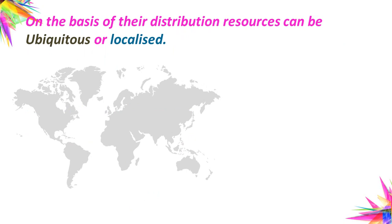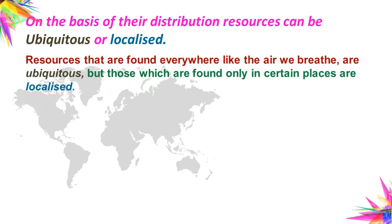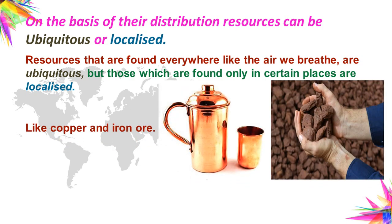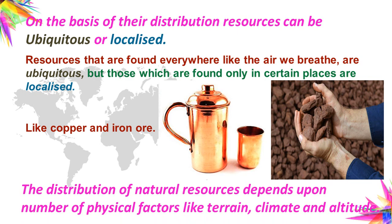On the basis of distribution, resources can be classified into ubiquitous or localized. Resources found everywhere, like the air we breathe, are ubiquitous. But those found only in certain places are localized resources — for example, copper, black soil, and iron ore. The distribution of natural resources depends upon physical factors like terrain, climate, and altitude.